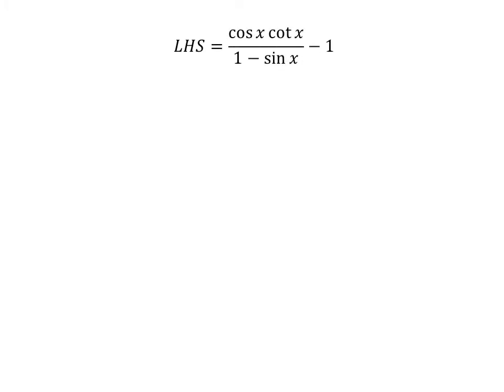Let us start from the left hand side of the identity. The left hand side is equal to cosine of x times cotangent of x, upon 1 minus sine of x, minus 1.